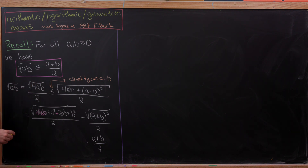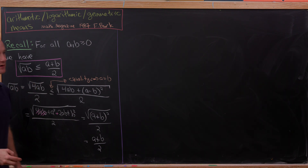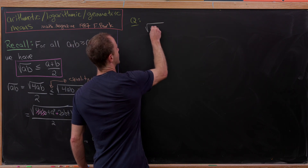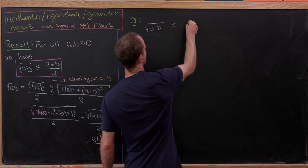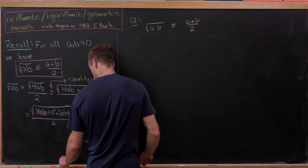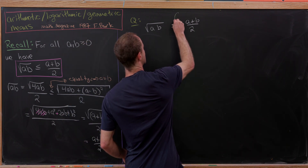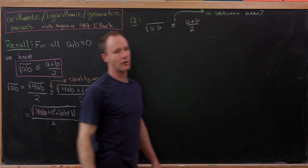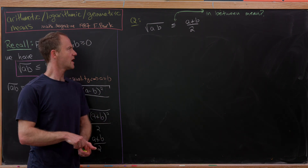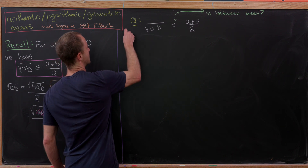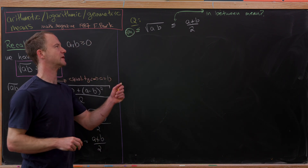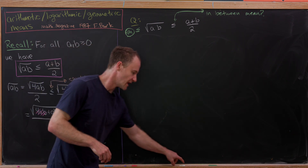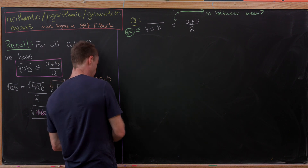Now that we have the geometric mean less than or equal to the arithmetic mean, this motivates the following question: is there something like a mean that fits in between these two? There is also the harmonic mean, but it's well known to be on the left of the geometric mean. So what we really want is something in between the geometric and arithmetic means, and that's where we introduce the logarithmic mean.